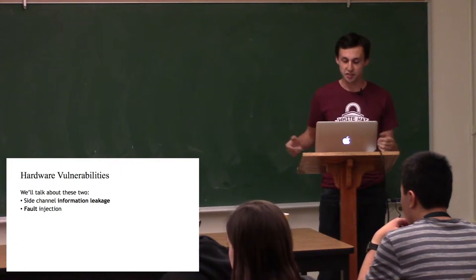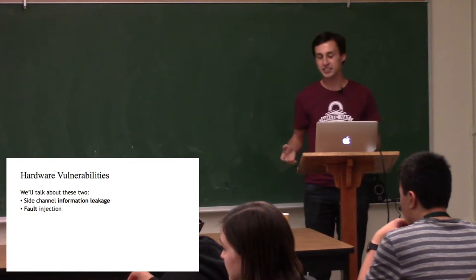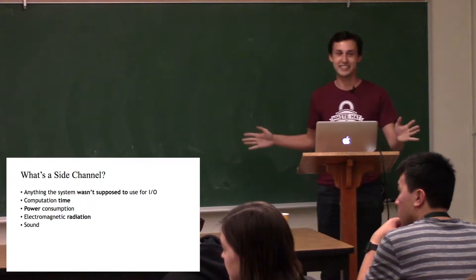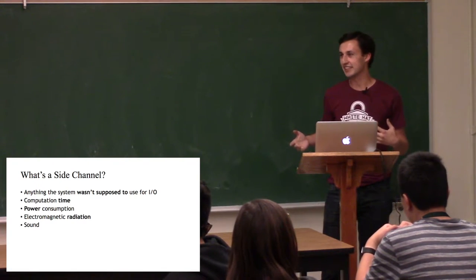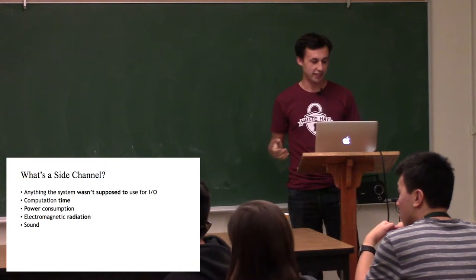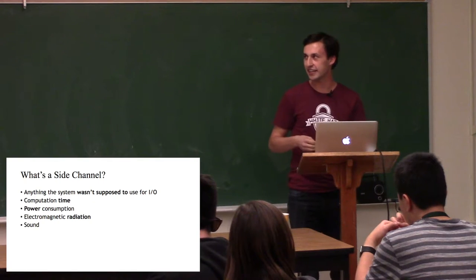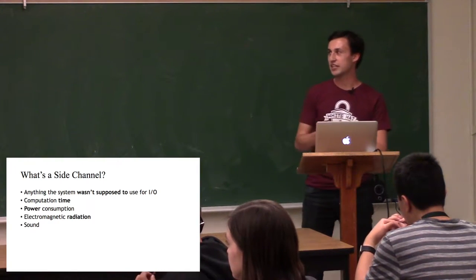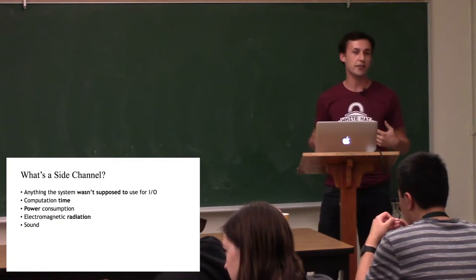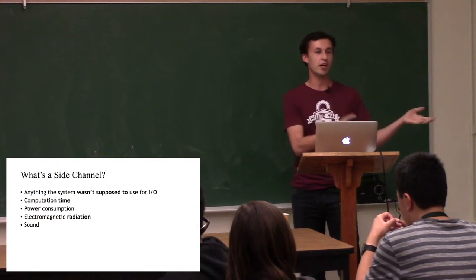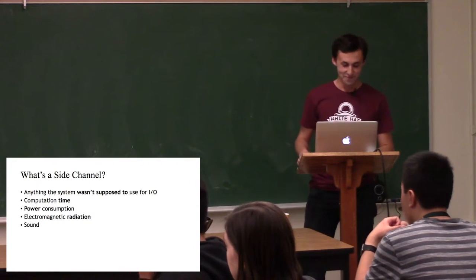So getting started with hardware vulnerabilities. In this talk, we're going to talk about these two vulnerabilities. The first is side channel information leakage, and the second is fault injection. So what's a side channel? Well, essentially, it's anything that the system wasn't supposed to use for input and output, but ultimately does through some means. Examples of this are the computation time. Typically, when you're modeling computation, you don't think about the fact that it takes time to happen. But you can actually leak information through the amount of time that it takes a computer to do something.